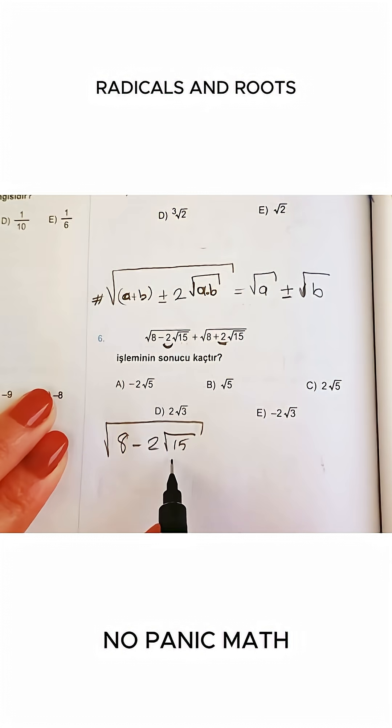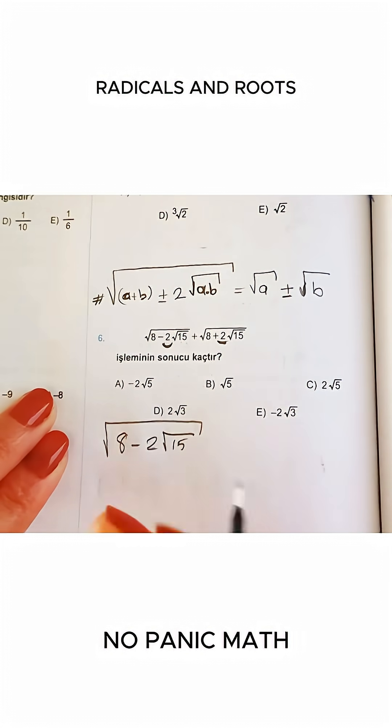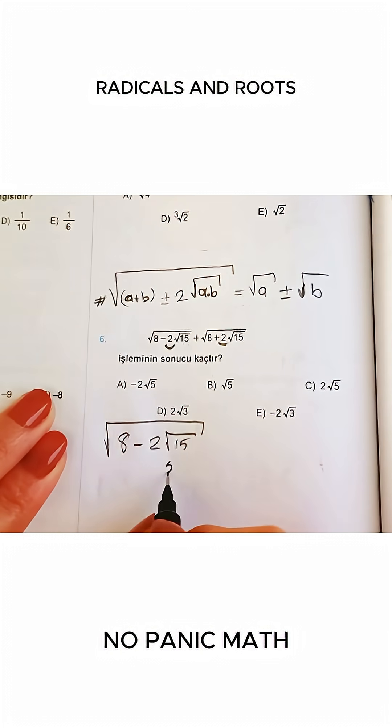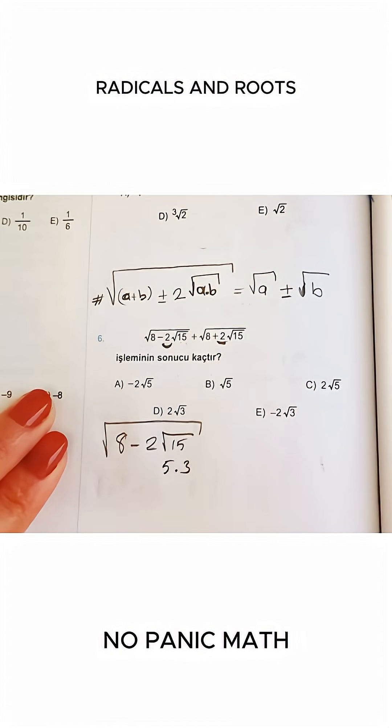Now if we say 15 and 1, multiplying 15 by 1 gives us 15. If I add them I get 16, which doesn't give me 8. So the most suitable numbers will be 5 and 3. I think we're good up to this point.